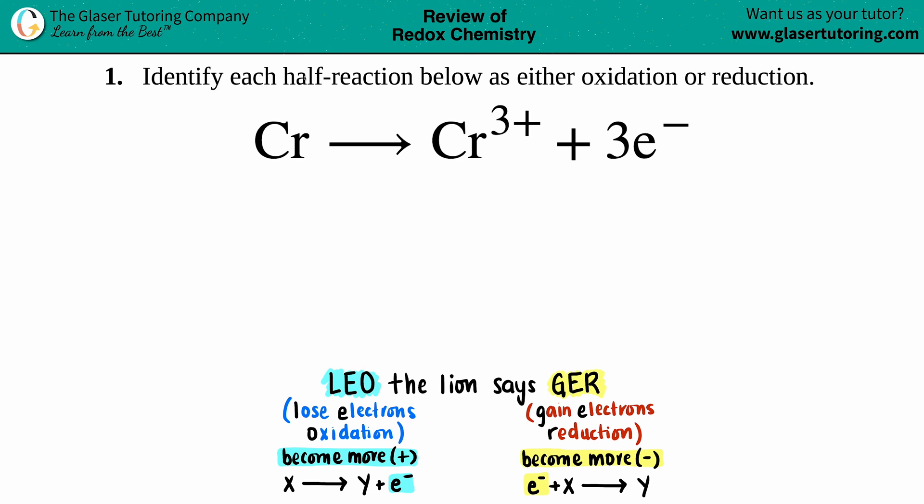Number one: identify each half-reaction below as either oxidation or reduction. And then we have the balanced equation: Cr, so chromium metal, which will yield into Cr³⁺ plus three electrons. E negative is always electrons.